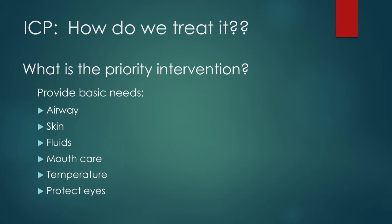When we look at ICP treatment, we also want to think about measuring cerebral perfusion pressure — our CPP. Cerebral perfusion pressure is basically our blood flow to the brain. We calculate it by taking our MAP — mean arterial pressure — minus the ICP. Our goal cerebral perfusion pressure is going to be 60 to 70 millimeters of mercury, and the ICP should be less than 20. For example, a MAP of 60 and an ICP of 10 gives us 50 — so we need CPP to be 60 to 70 or greater, with ICP less than 20.